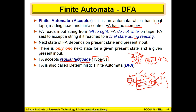Regular languages are accepted by finite automata. FA is also called deterministic. Deterministic means: in a single state, for a single kind of input, we will have a single next state — that's why it is called deterministic. Finite means the number of states is countable. Automata means it is going to work automatically — by taking input, it gives the desired output. That's why it is known as DFA.